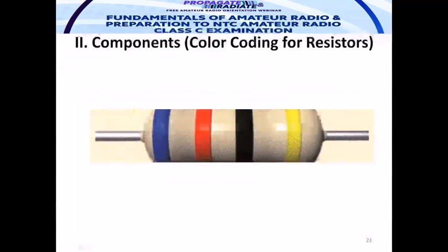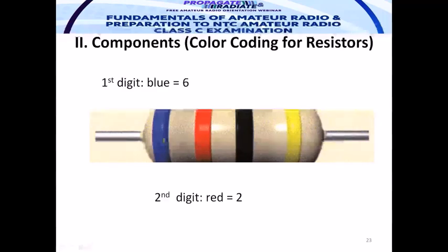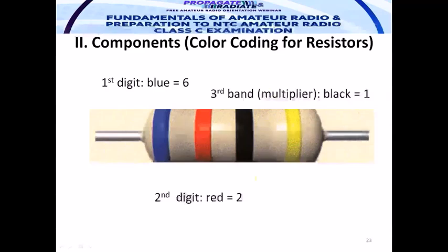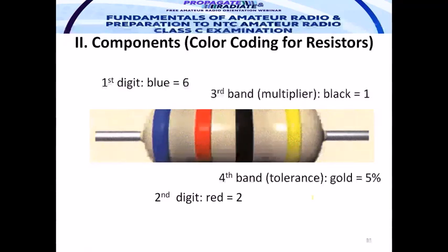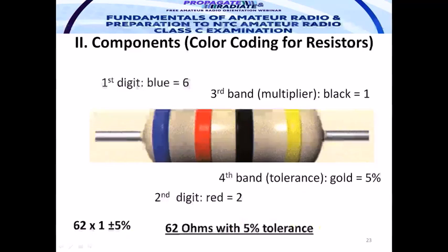Some exercises: referring to the color code table, what is the value of this resistor? The first digit is blue, the second digit is red — you have the first significant digit, the second significant digit, the multiplier, and the tolerance. The answer is 62 ohms, plus or minus 5% tolerance.